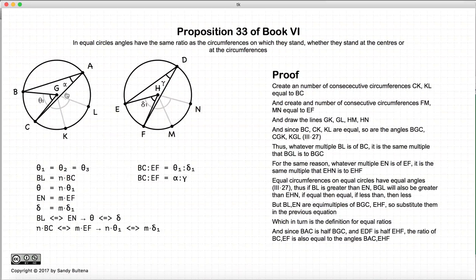Now, of course, alpha is half of theta1 and gamma is half of delta1. So we've also shown that BC to EF is equal to the ratio of alpha to gamma.